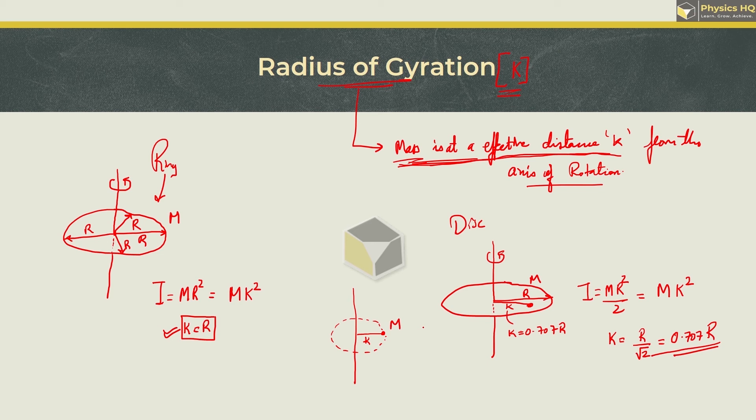Now here why we got k value less than r? Reason being that from the axis of rotation if I draw a smaller circle, you got few masses very near to the axis. Then if I draw another circle, you got few masses which are not so near but not too far away, and the last section which is very far away from this axis of rotation. So this radius of gyration basically tells you that effectively the overall mass is at what distance.